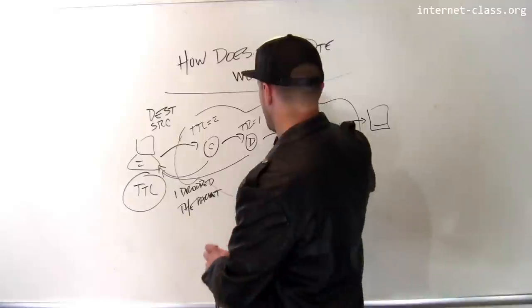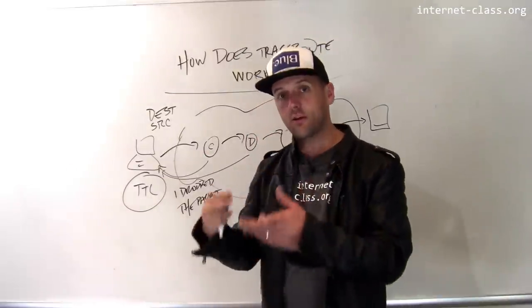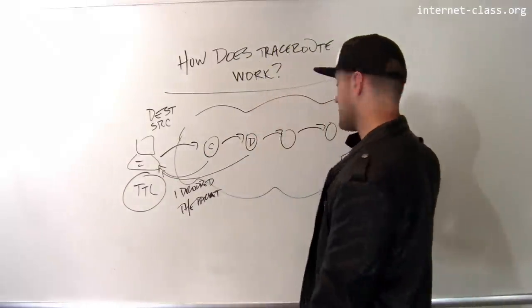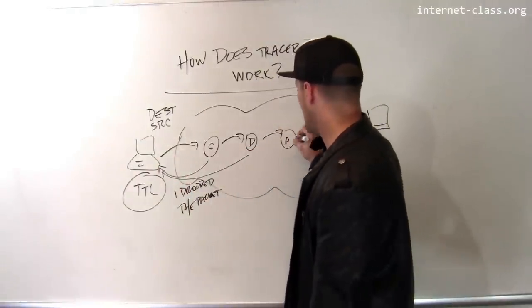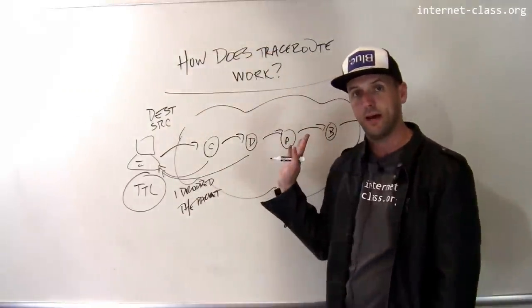And traceroute just continues to do this, sending packets toward the destination with incrementally increasing time to live, one, two, three, four, all the way until it reaches the destination. And in doing so, it can identify potentially all of the routers that are used along a particular routing path.